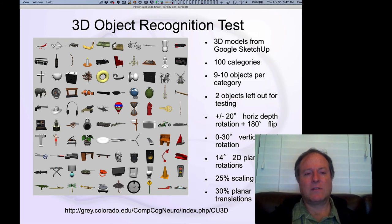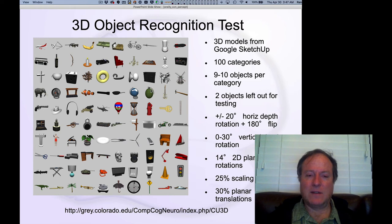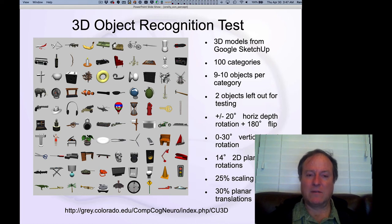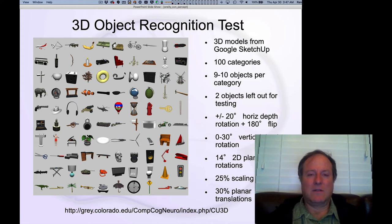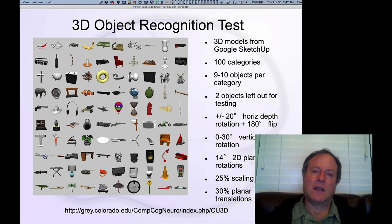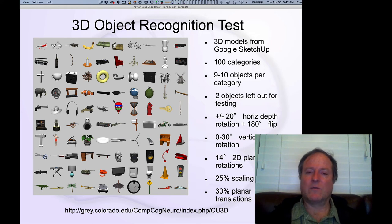One characteristic of more realistic datasets used in current research is that they have complex cluttered backgrounds. We think — and have evidence — that people actually use attentional mechanisms to filter out those backgrounds. So we think you want to have those attention mechanisms in place to truly understand how the brain recognizes objects. That's why we chose to look at objects without those backgrounds initially, since our models don't yet have those attentional mechanisms.